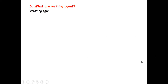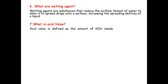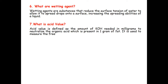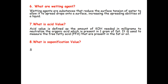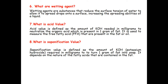What are wetting agents? Wetting agents are substances that reduce the surface tension of water to allow it to spread as a drop onto a surface, increasing the spreading ability of the liquid. What is acid value? Acid value is defined as the amount of KOH in mg needed to neutralize the organic acid present in 1 gram of fat. It is used to measure free fatty acids present in fat or oil. What is saponification value? Saponification value is defined as the amount of KOH in mg required to turn 1 gram of fat into soap. It depends on the nature of fatty acids contained in the fat.